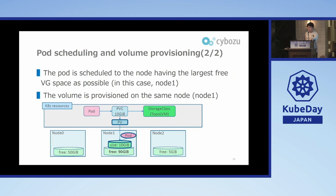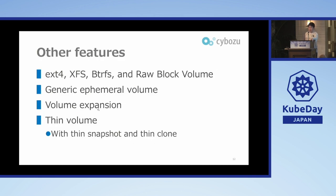As a result of TopoLVM volume management and pod scheduling, the pod is scheduled to the node having the largest free VG space — in this case, node one with 100 gigabytes, the largest value among the three nodes. The volume is provisioned on the same node as the pod; both are scheduled to node one. The logical volume is created on the volume group on node one and is bound to the PV, PVC, and pod resources.